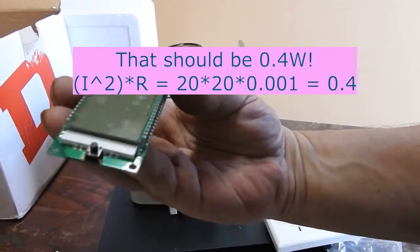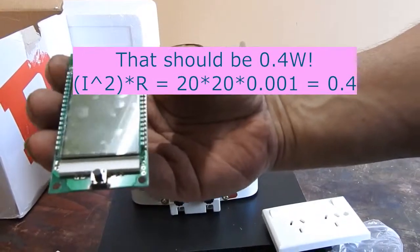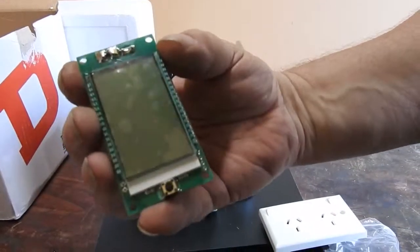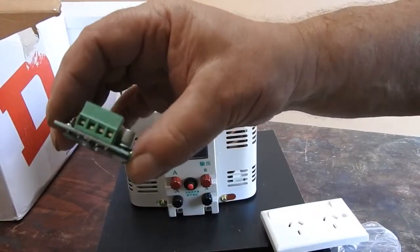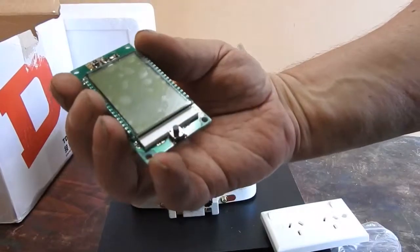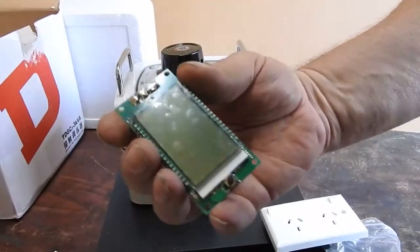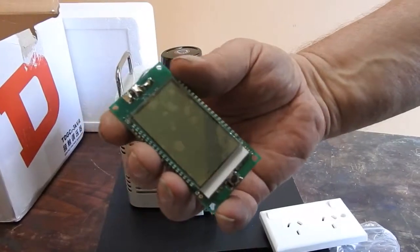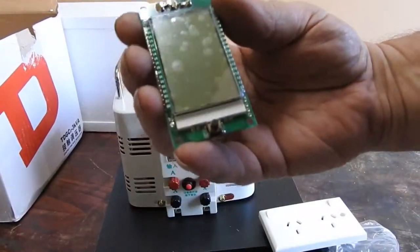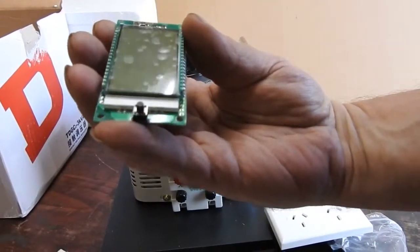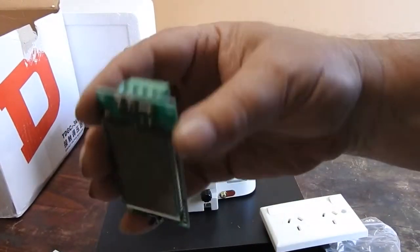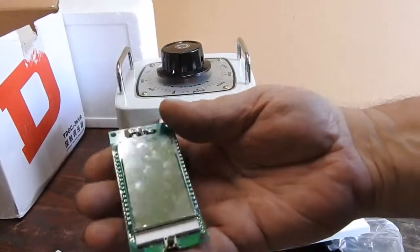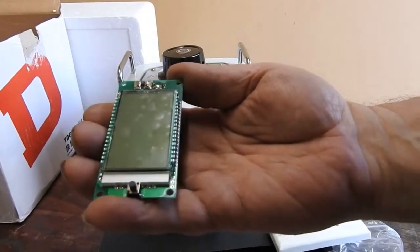And at 20 amps, which is the maximum current this thing can carry, that one milliohm represents 0.4 watts. Now, I think that's a 2512 style package. I've got to have a closer look and measure it. It's probably good for about a watt, and 0.4 watt dissipation at 20 amps is within its range, and it shouldn't get too hot at that.